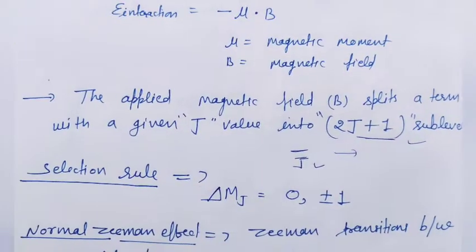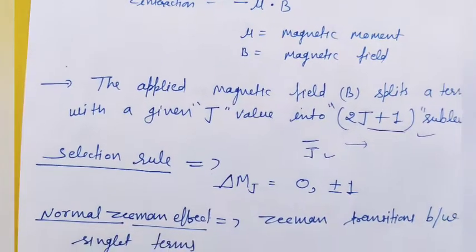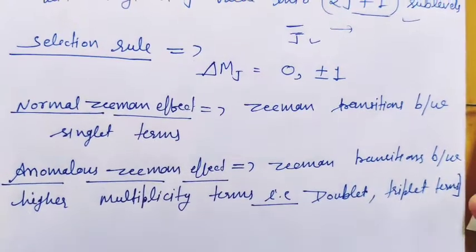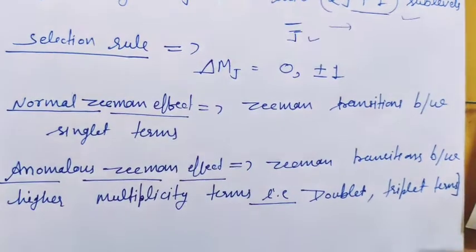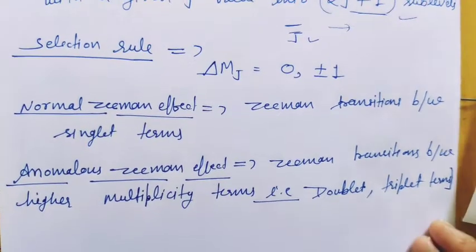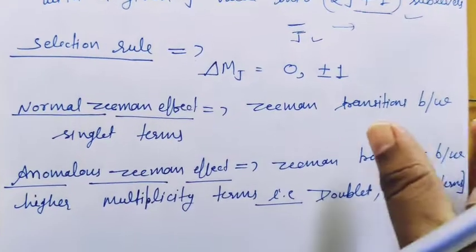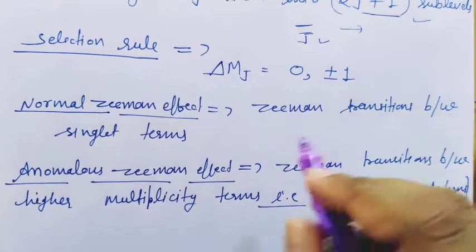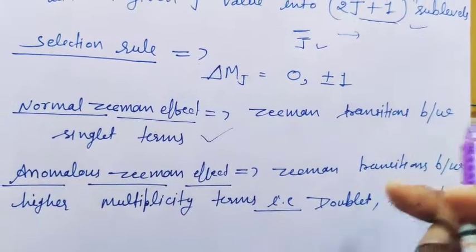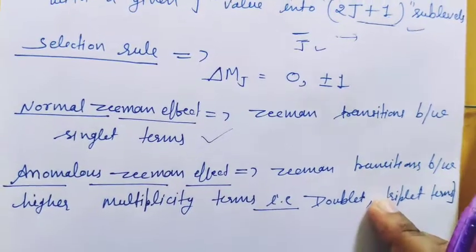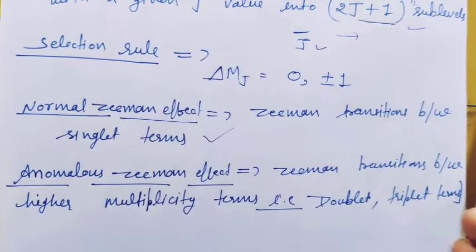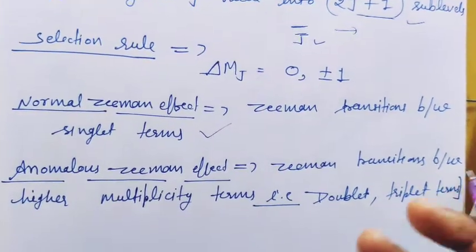The Zeeman effect is of two types: the first is the normal Zeeman effect and the second is the anomalous Zeeman effect. In the normal Zeeman effect, the transitions involve only singlet terms. In the anomalous Zeeman effect, the transitions involve higher multiplicity terms like doublets and triplets.